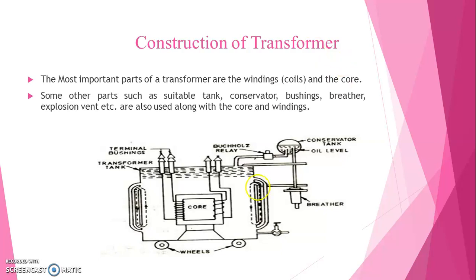And this is also we have to concentrate how the core is immersed inside the transformer tank where oil filled in transformer tank. The most important parts of transformer are the windings and the core. Some other parts such as suitable tank, conservator, bushings, breather, explosive vent, etc. are also used along with the core and windings.